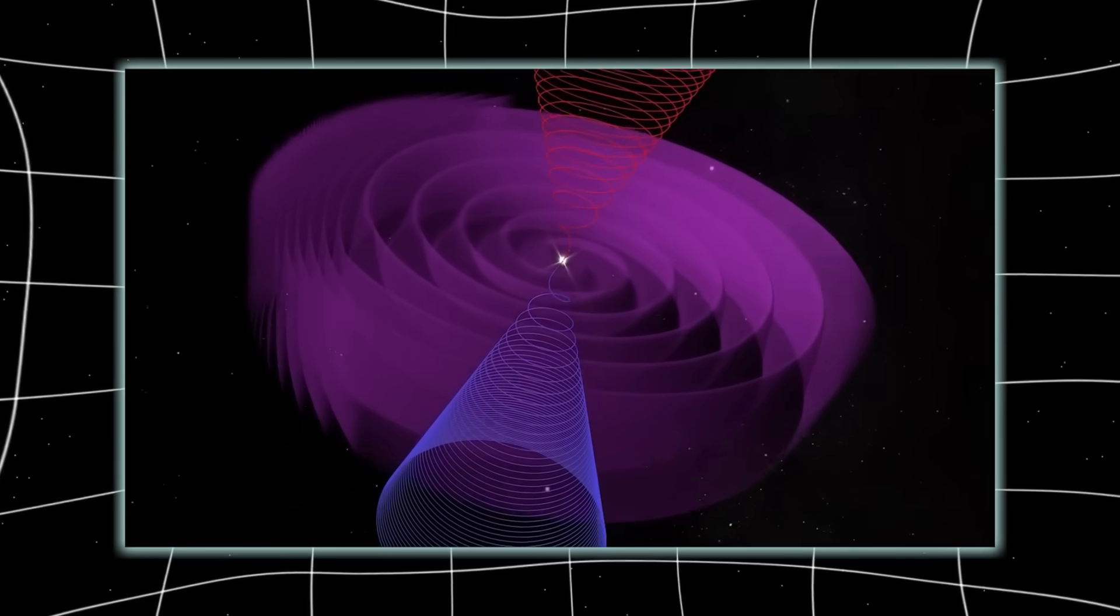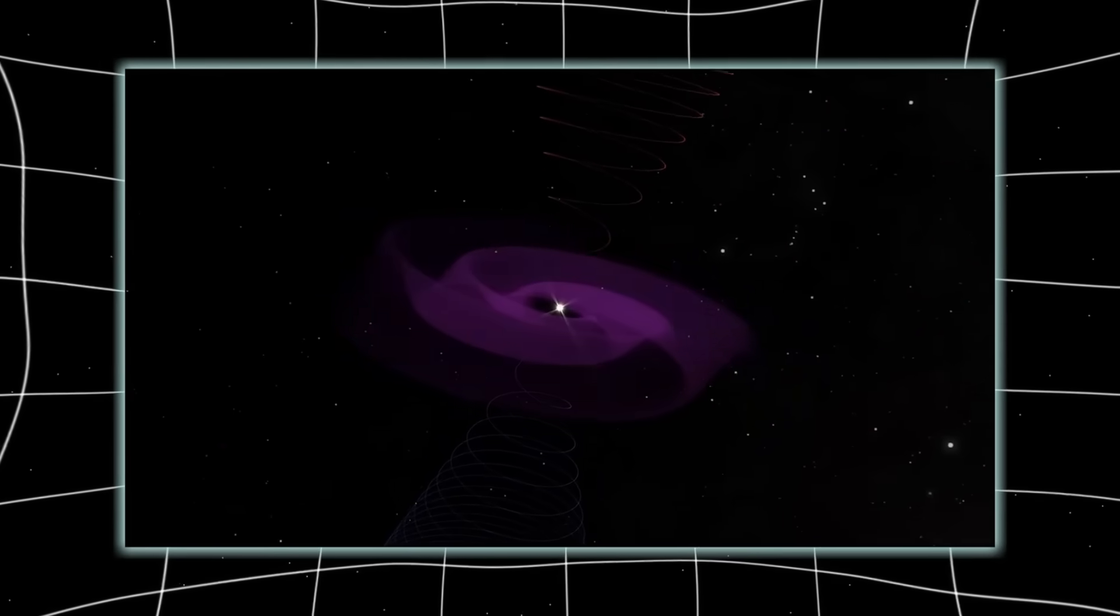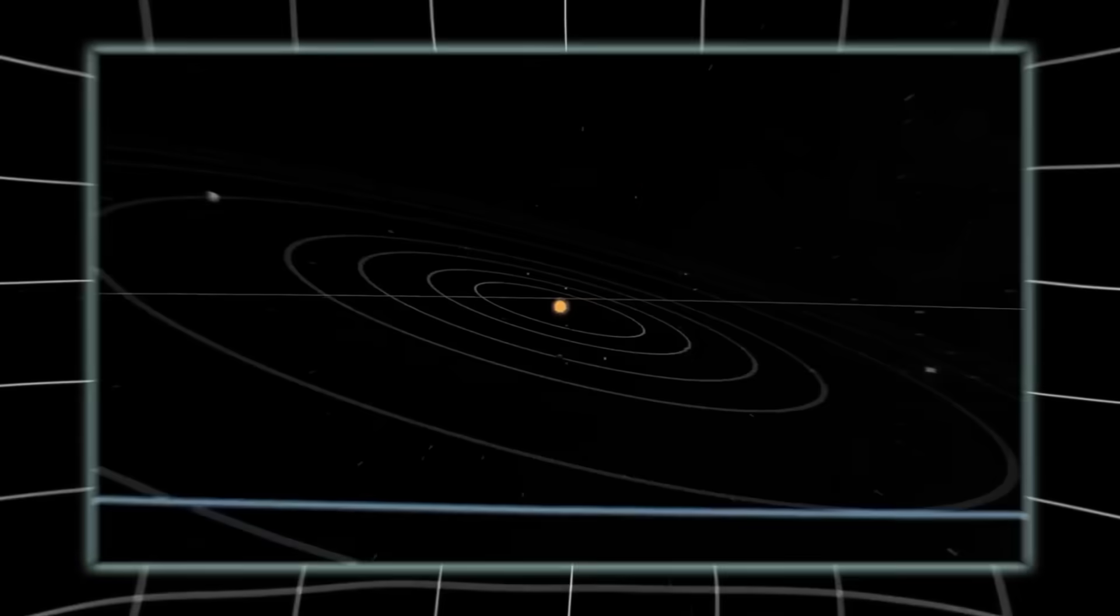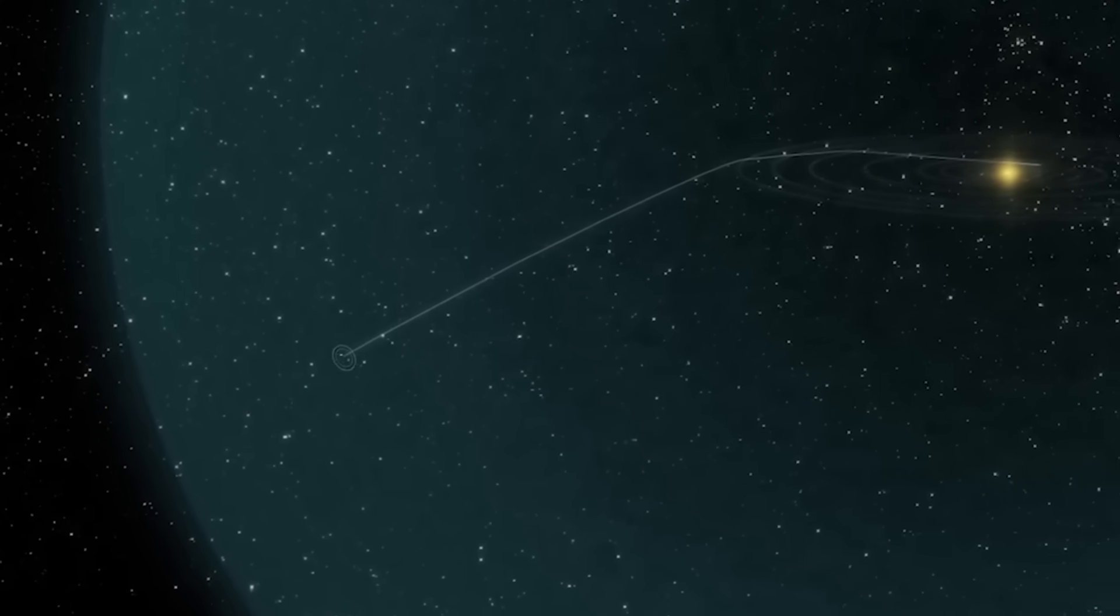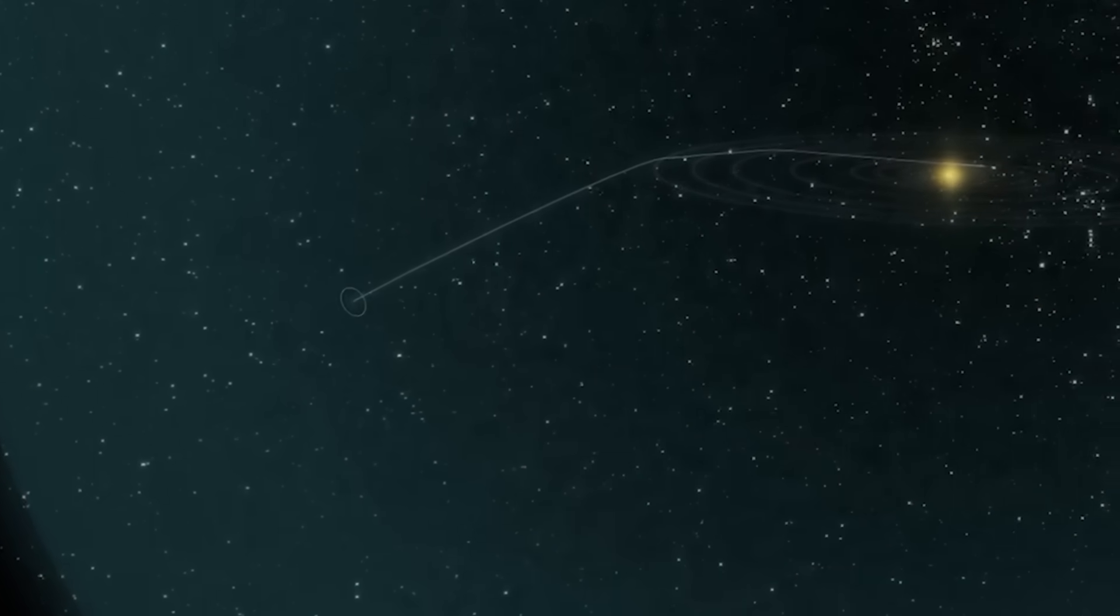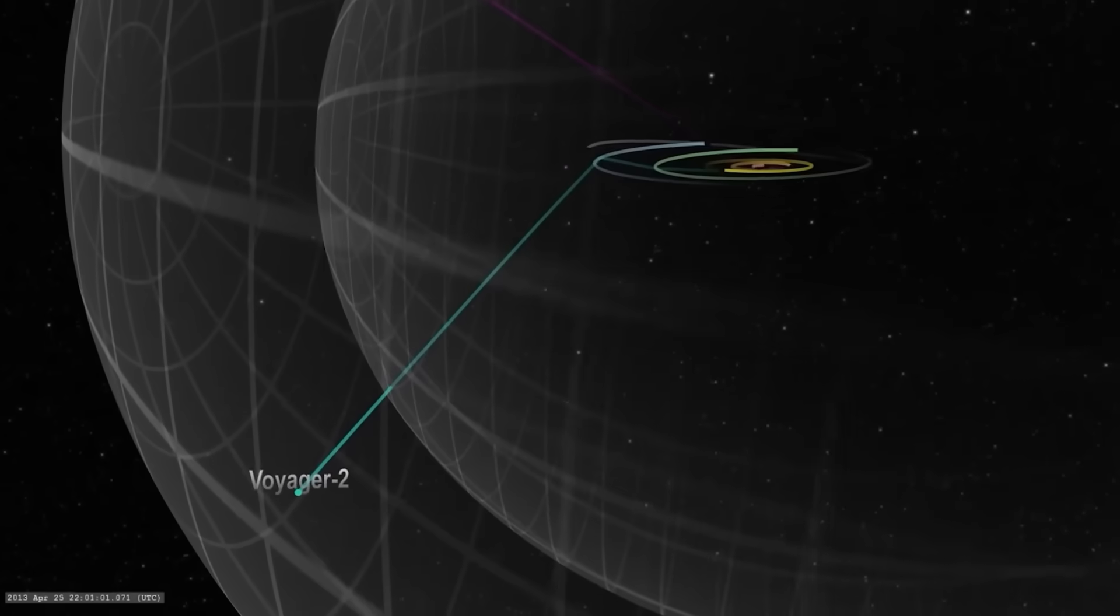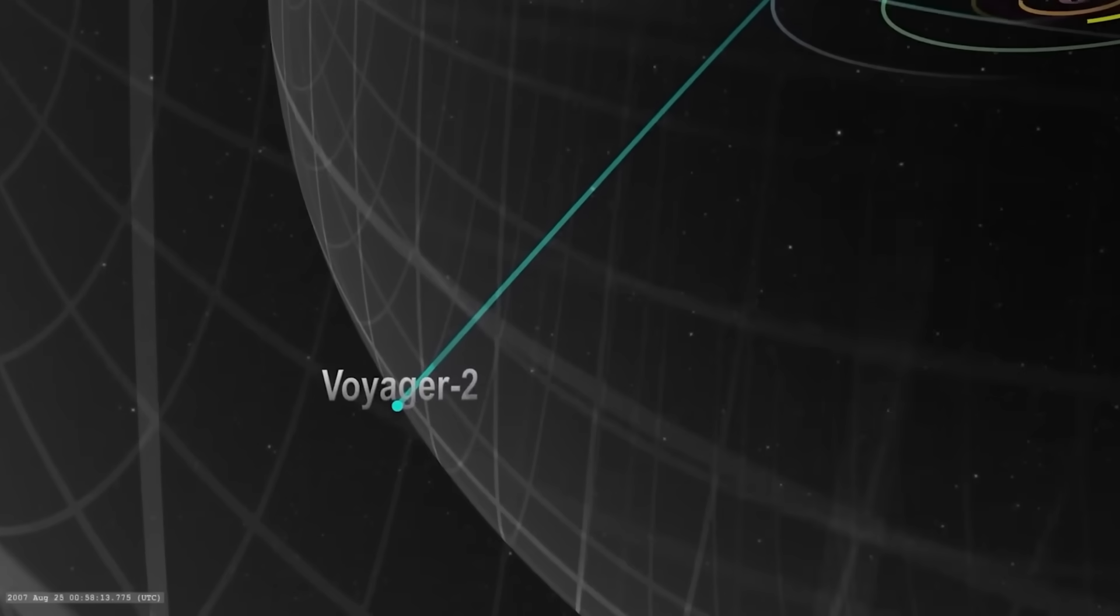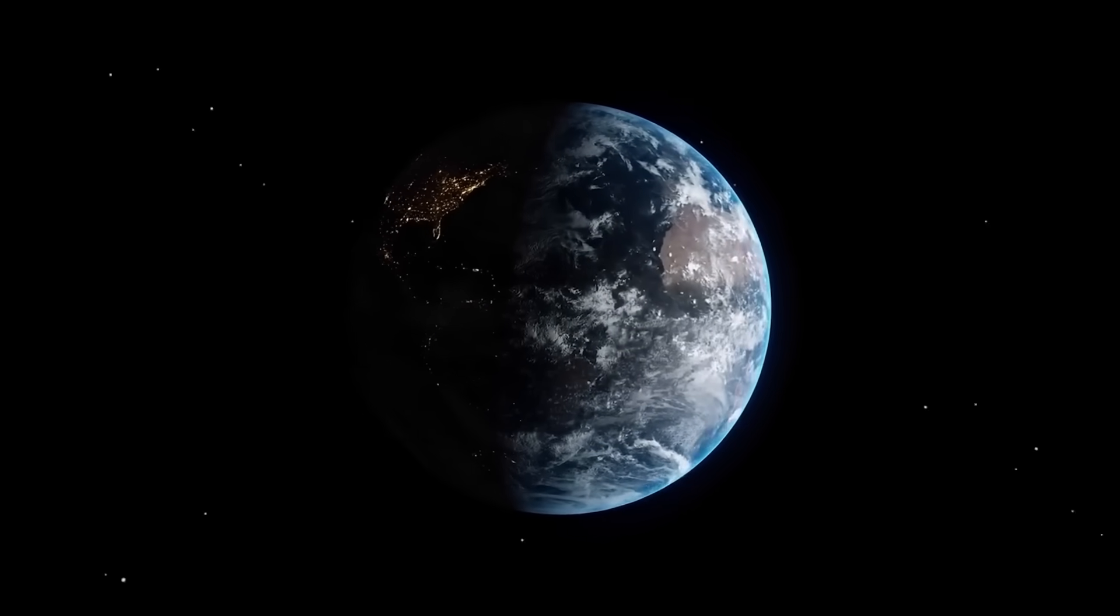And if the solar wind weakens, the boundary draws closer to home, allowing more galactic radiation to seep inside. If it strengthens, the barrier pushes outward, shielding us more effectively. The implication is disturbing. Earth's protection isn't permanent. It fluctuates. It can fail. And Voyager 2's sharp transition into the galactic medium revealed just how thin that veil truly is. The cosmos beyond isn't empty. It's violent, unpredictable, and much closer than we imagined.